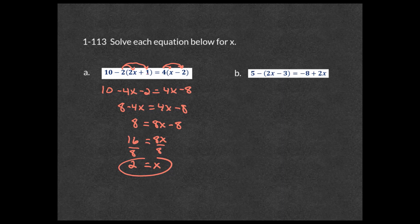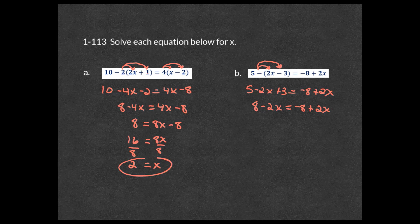For part b, you must distribute the negative to everything in the parentheses — a common mistake. That gives 5 minus 2x plus 3 equals negative 8 plus 2x. Combining like terms: 8 minus 2x. Add 2x and add 8 to both sides: 16 equals 4x. Divide by 4 and x equals 4.